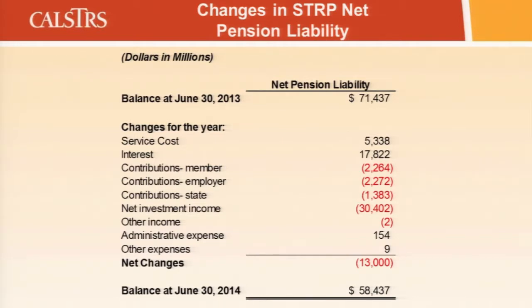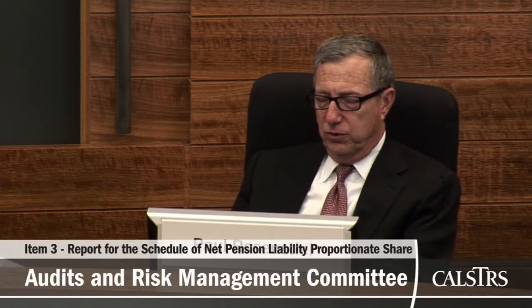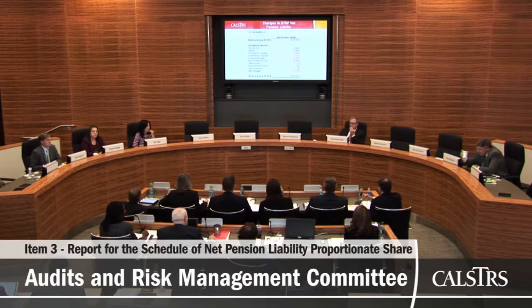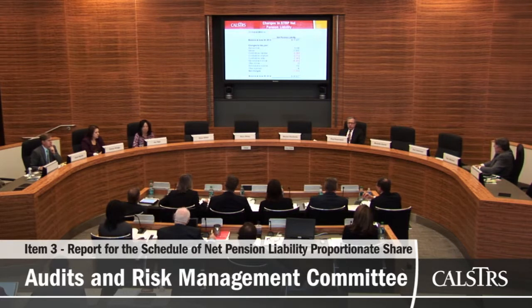These are not purely actuarial numbers — the service cost and interest are actuarial, while other numbers come from financial reporting. The interest figure is the interest on the unfunded obligation computed and rolled forward, which is the 7.5% rate. Net investment income represents realized and unrealized gains and losses net, plus dividends and interest. A committee member asked about the interest rate and confirmed it is the 7.5% rate applied to the unfunded obligation.